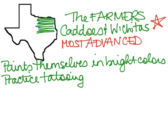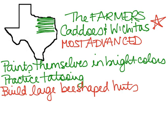They also practice tattooing. The reason they can do all these things is because they do not have to move from place to place — they've learned to farm. They're able to build large B-shaped huts that do not get taken apart. They don't have to follow the food anymore; the food is available to them where they live.